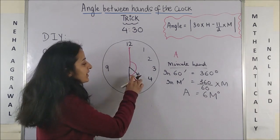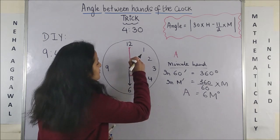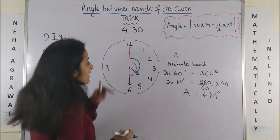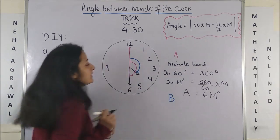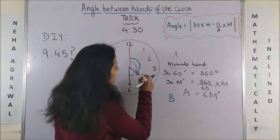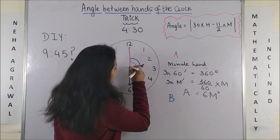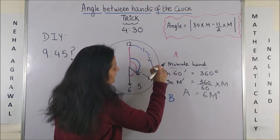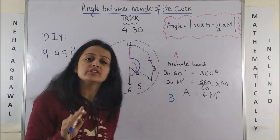Now, same way if I have to talk about this hour hand, we are looking to find this blue angle. If I have to call this as B, here is a little twist. Basically, if you see till here, till 4 o'clock, these are 1, 2, 3, 4, 4 full rounds.